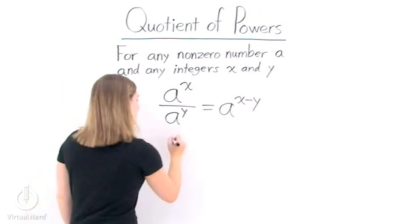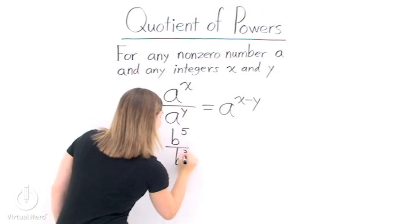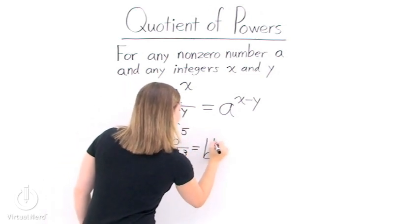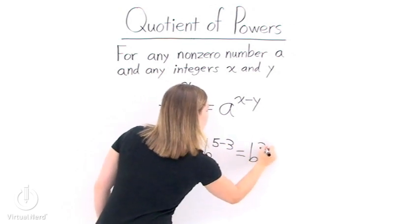Let's look at an example. We have b to the fifth divided by b to the third. The quotient of powers says this is the same thing as b to the 5 minus 3, or b squared.